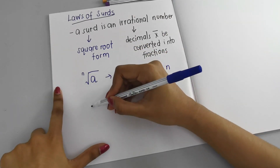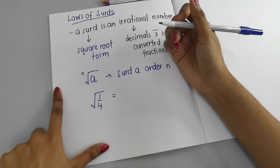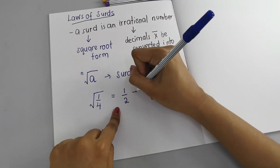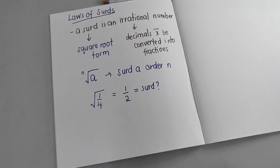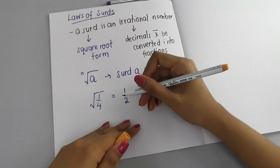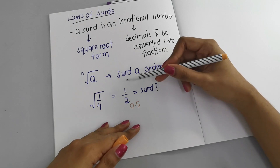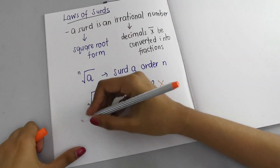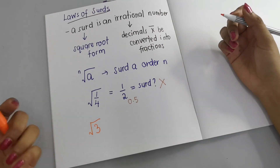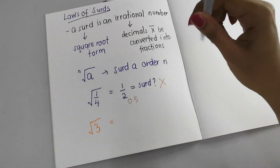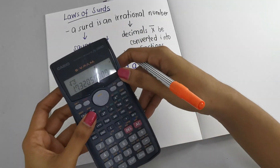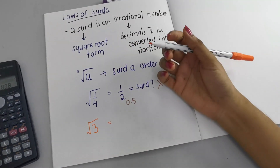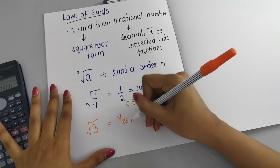Now let's see if something is a surd or not. If I give you square root of 1/4: the square root of 1 is 1 and the square root of 4 is 2, so we get 1/2. Is this a surd? No — because 1/2 is a fraction, and if you change it to a decimal it's 0.5, which can be converted back to a fraction. Now take square root of 3. If you key it into a calculator you get 1.732050808... and you cannot convert that decimal into a fraction, so yes, this is a surd.